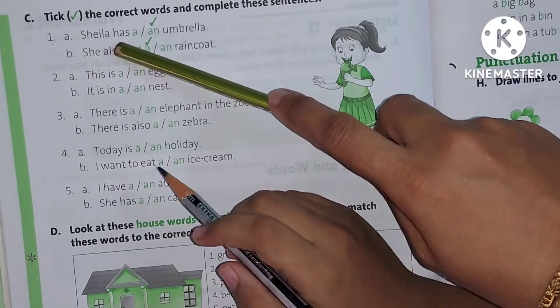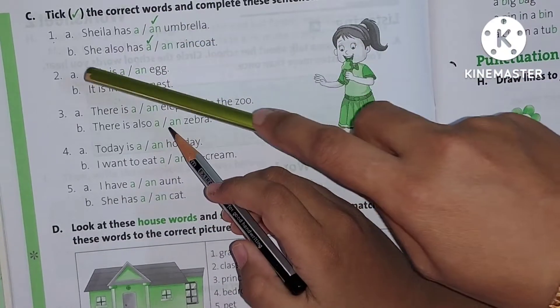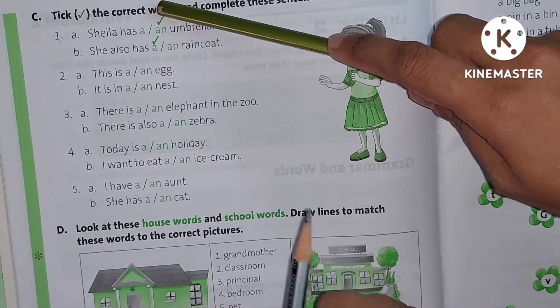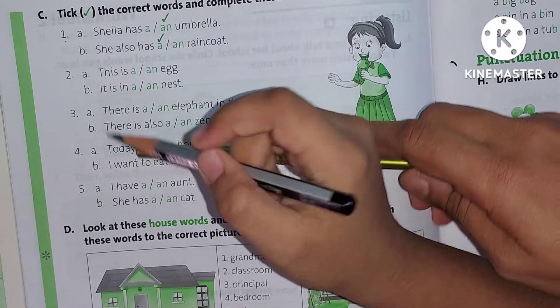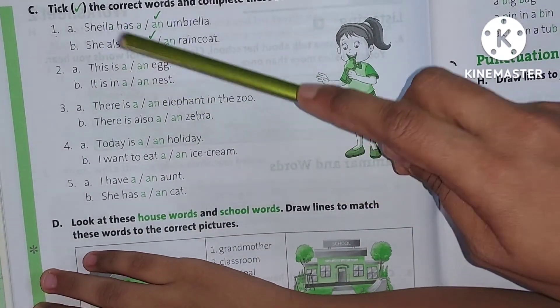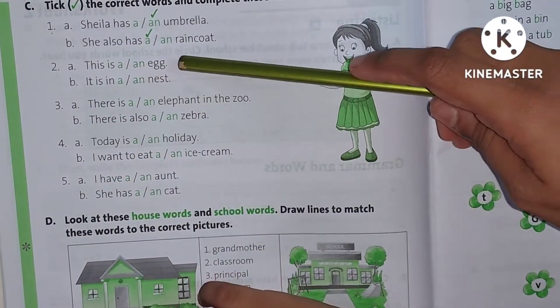One A. Sheila has an umbrella. Put a tick mark. She also has a raincoat. So, A and AN. Here are tick marks. So, you will complete them? This is A and an egg. What do you say? AN. AN. Good.